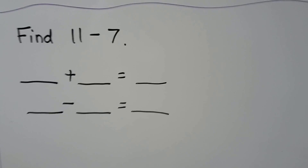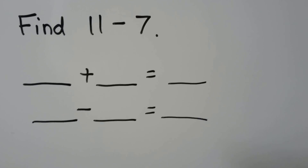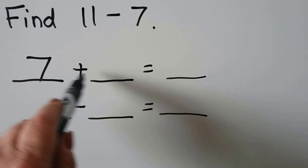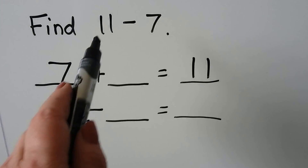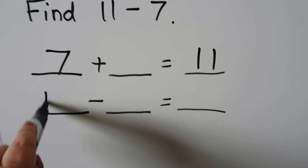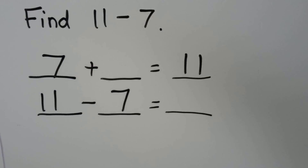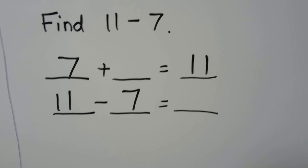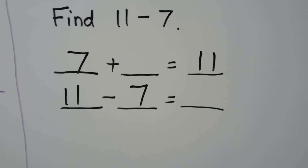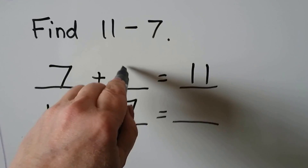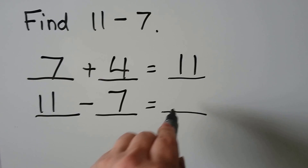We can find 11 minus 7. We can write a related addition fact: 7 plus an unknown number is equal to 11. Our subtraction sentence is 11 minus 7 equals an unknown number. We start at 7 and count up to 11: 7, 8, 9, 10, 11 — that's 4. So 7 plus 4 is equal to 11, meaning 11 minus 7 is equal to 4.